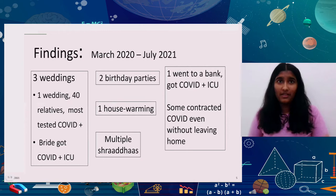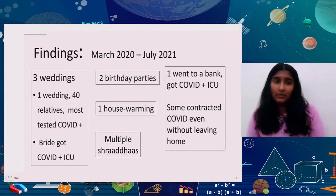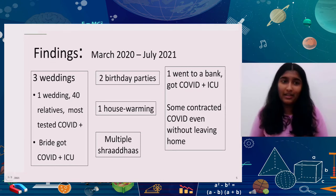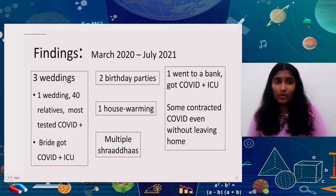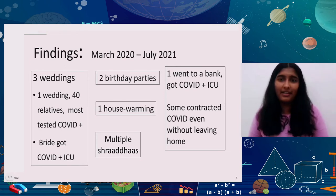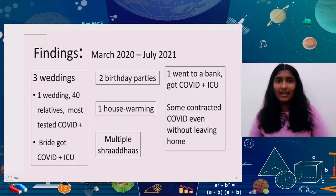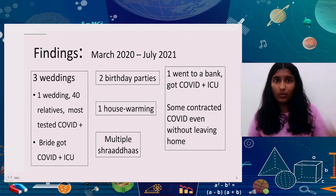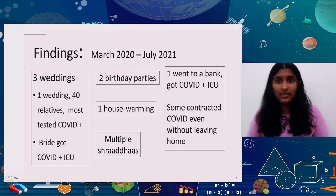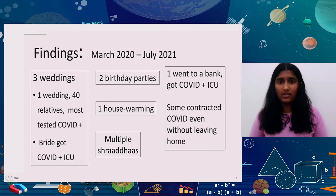Here are some things I found out. There were three weddings. One wedding was a complete disaster — about 40 of my relatives attended it, and most got COVID. Even the bride got COVID and was admitted to the ICU, and parents and grandparents all got it too. Thankfully, the other events did not spread the virus. I also noticed that older people in my family got COVID even when they didn't go out — because their kids or grandkids went to work or the bank and contracted the virus.